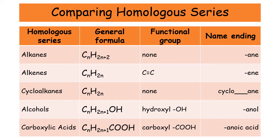For alcohols, it's CnH2n+1 OH. And for carboxylic acids, it is CnH2n+1 COOH. Remember with carboxylic acids that if you've got something that has six carbons, one of those carbons is part of the COOH group. So if it had six carbons in total, one is in the COOH, and that means n is 5. It's very easy to get a little bit mixed up when it comes to the general formula of carboxylic acids.